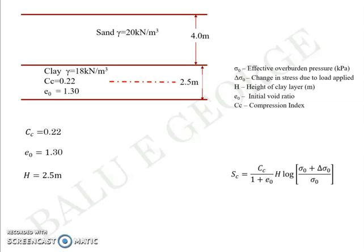So Cc is directly given as 0.22, e0 is directly given as 1.30, H is the height of the clay layer which is 2.5 meters. To calculate sigma 0, or the effective overburden pressure at this dotted line, all you have to do is find the surcharge load above that, which is 4 into 20 plus 1.25 into 18.